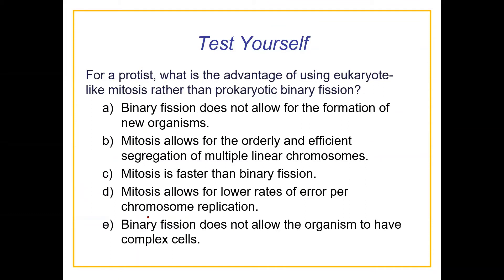Here's a quick test-yourself question. We've got a protist — what is the advantage of using eukaryotic mitosis rather than prokaryotic binary fission? Option A: binary fission does not allow for the formation of new organisms — that's not true, E. coli is fine with that. Option B: mitosis allows for the orderly and efficient segregation of multiple linear chromosomes — yes, that's a good one. Option C: mitosis is faster — nope. Option D: mitosis allows for lower rates of error for chromosome replication — no, that has to do with DNA replication enzymes. Option E: binary fission does not allow the organism to have complex cells. The most correct answer is B.